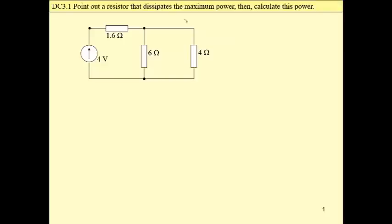So we have two resistors connected in parallel and then they are connected in series with 1.6 ohm. At first we have to answer the question.